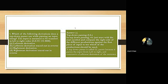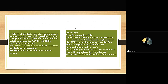Gate question 1 (CS 2000): Which of the following derivations does a top-down parser use while parsing an input stream, assuming input is scanned left to right? Options: A) leftmost derivation, B) leftmost derivation played out in reverse, C) rightmost derivation, D) rightmost derivation played out in reverse. The answer is A — leftmost derivation.